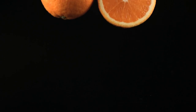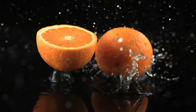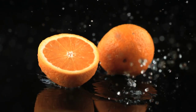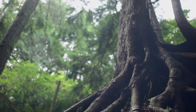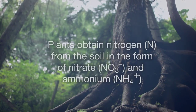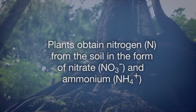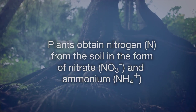Most humans get their nitrogen sources from eating plants and animals. Most plants cannot utilize atmospheric nitrogen, N2, but obtain nitrogen from the soil in the form of nitrates and ammonium. Thus, the nitrogen cycle is a very important cycle to life on Earth.